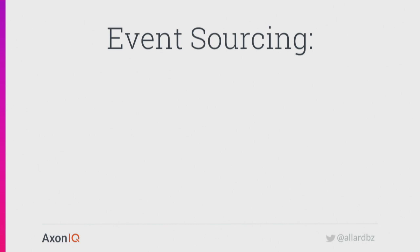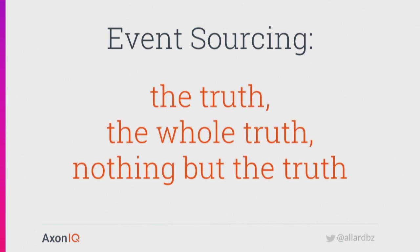Event sourcing is a concept where events are not just a side effect of what the system is doing — not just throwing events out the window just because it can. When you're doing event sourcing, you're using the events as the root of information, the source. It's about getting events to represent the truth, the whole truth, and nothing but the truth. Everything that happened is represented as an event, and everything represented as an event is really everything that happened. If something did not happen, there's no event.